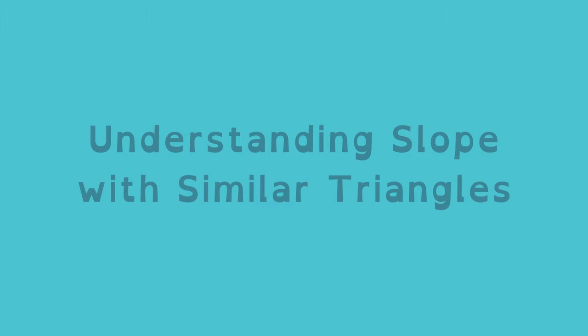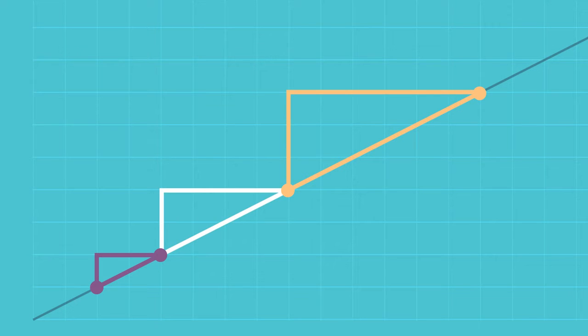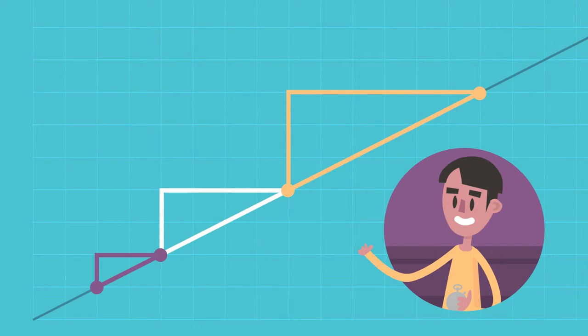Understanding slope with similar triangles. The slope, or steepness, of a non-vertical line is the same between any two points along that line. Similar triangles and Jason can help us understand why.